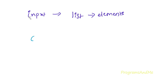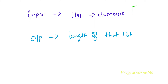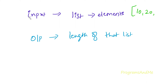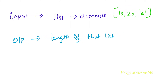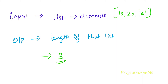The input of this program is a list and the output is the length of that list. For example, if I take 10, 20, 'a' — it contains three elements, so the length is 3. We already have a function called len() which finds the length of iterables, but here we want to find the length without using that built-in function.